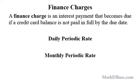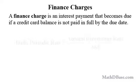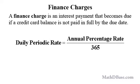To calculate the finance charge using the daily periodic rate, divide the annual percentage rate, or APR, on the card by 365, the number of days in a year, and round the result to the nearest ten thousandth.